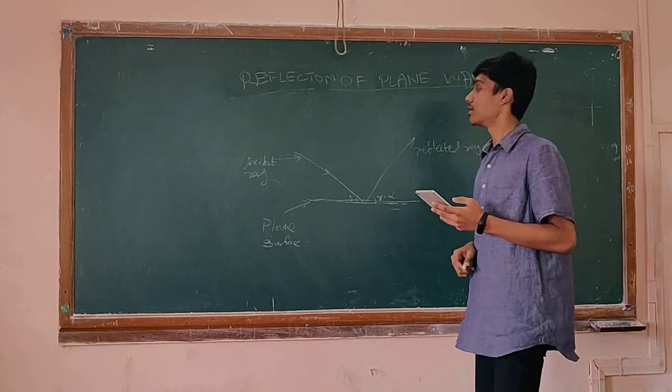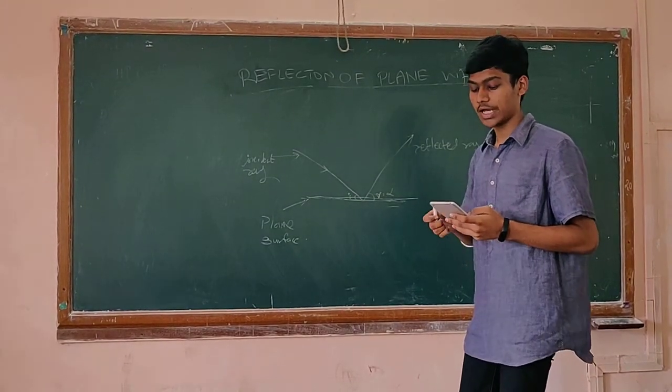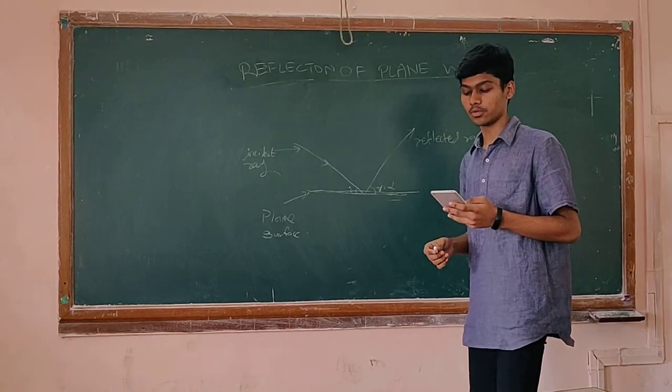Moving on to the Huygens principle. Huygens proposed the wave theory of light. He suggested that light waves travel in the form of waves.